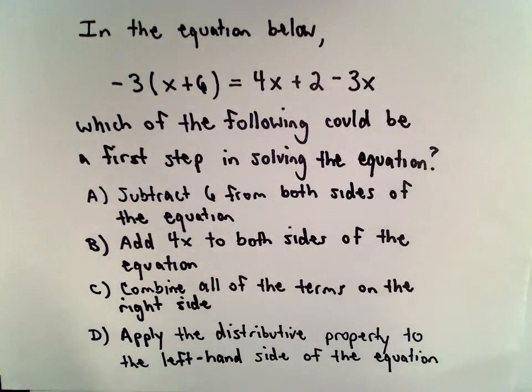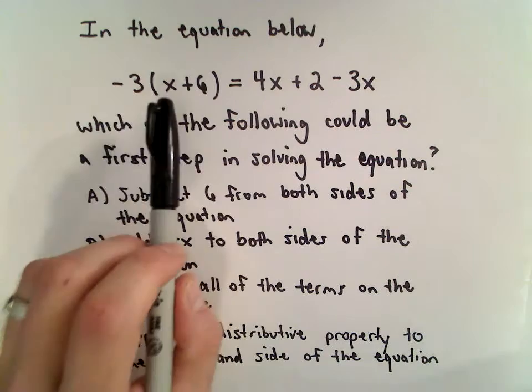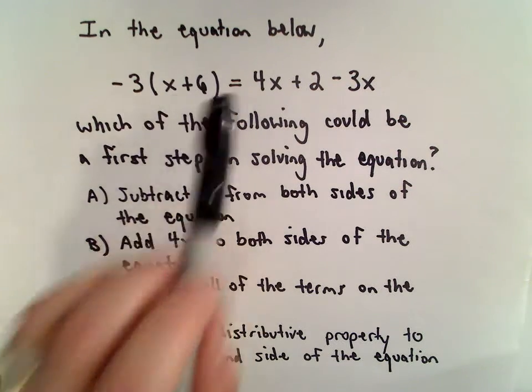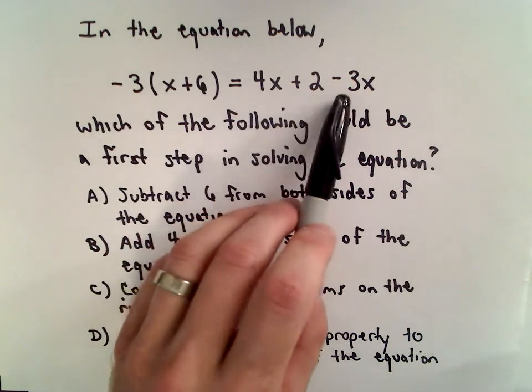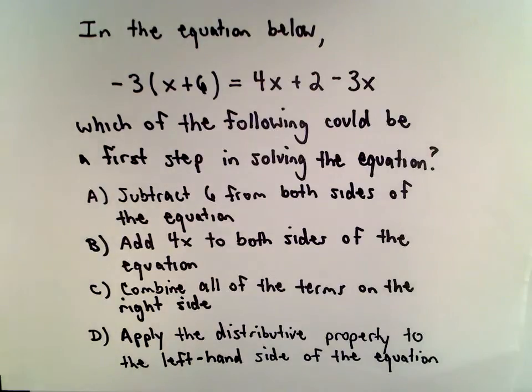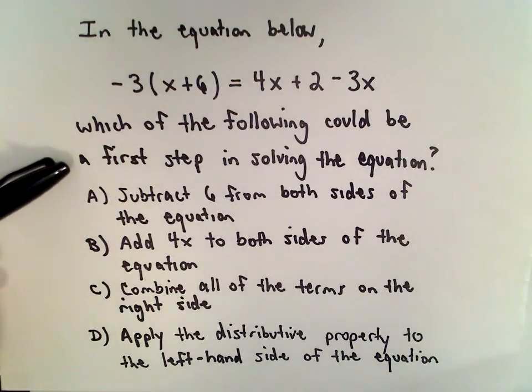Here we have the equation negative 3 multiplied by the quantity x plus 6 equals 4x plus 2 minus 3x. We want to know which of the following could be a first step in solving the equation.